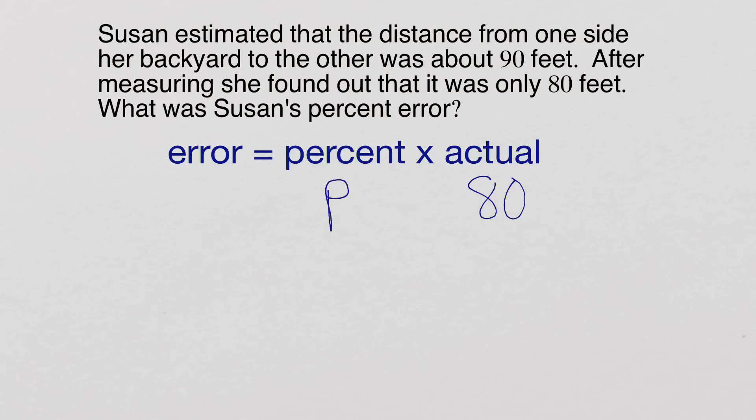We don't know a percent, so I'll put a P for percent. And again, we want the amount of the error, not what the number that she gave was. So she guessed 90. That was her estimate. That's not what we're putting there. What we're actually going to put there is 10, because she was off by 10 feet with her estimate. 90 minus 80 gives us a difference of 10.